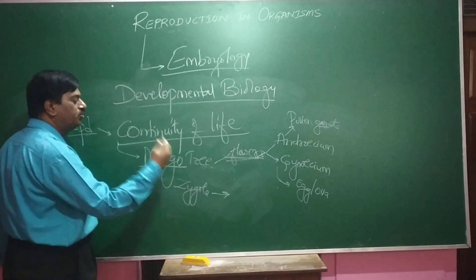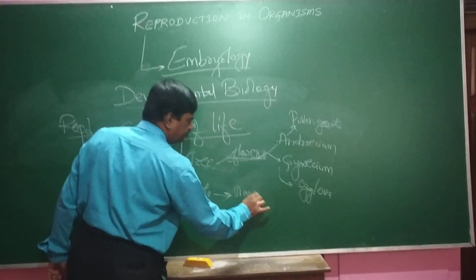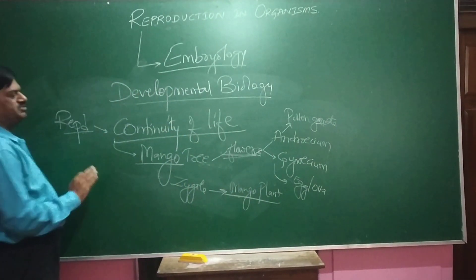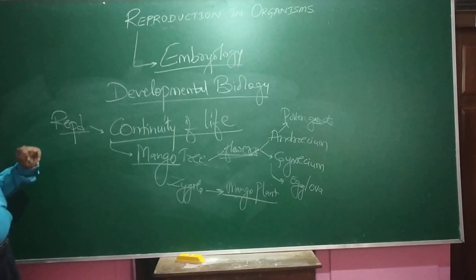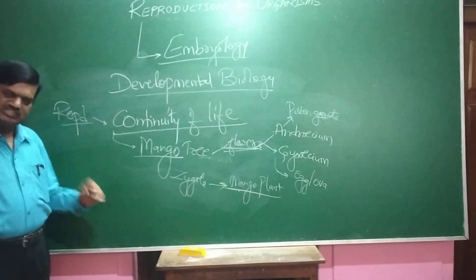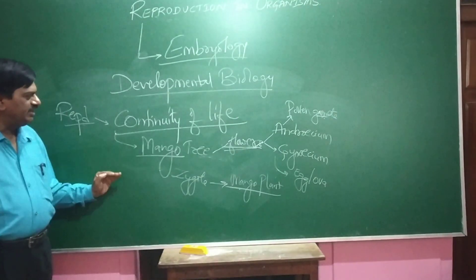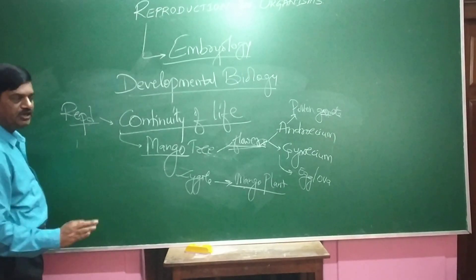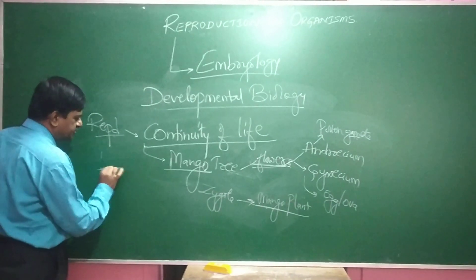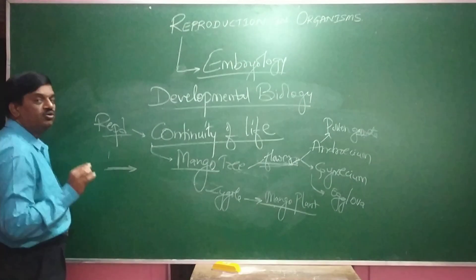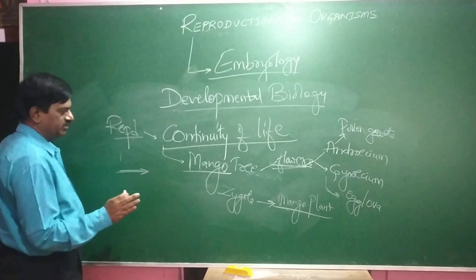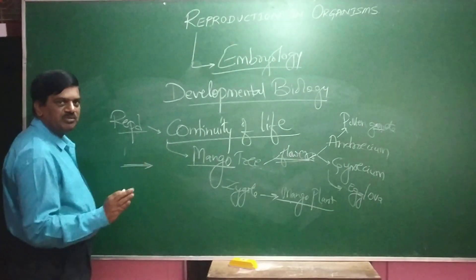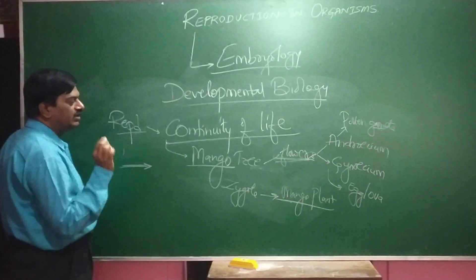The fusion of pollen and ovule gives rise to a zygote, and this zygote helps in the formation of a new plant called the mango plant. In your family, if your father and mother never reproduce, the life cycle is stopped there and no young ones will be continued in the family. So reproduction is a must for the continuity of life.